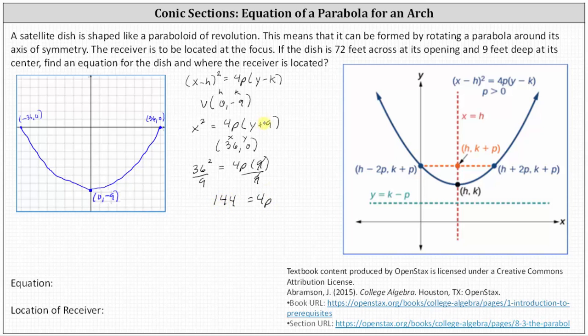Now that we have 4p, we know our equation. Our equation is going to be x² = 144(y + 9). Let's go ahead and record this below.